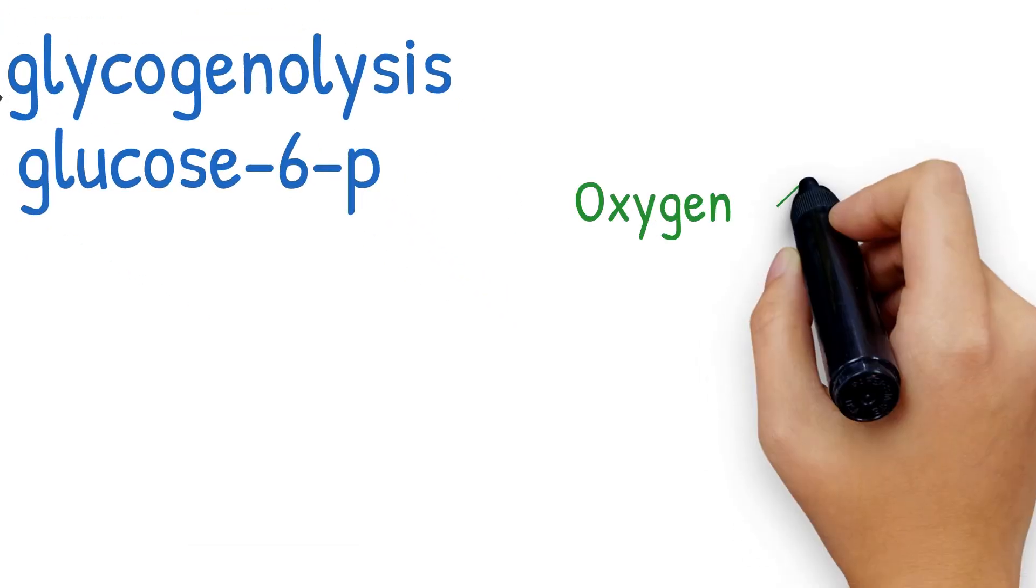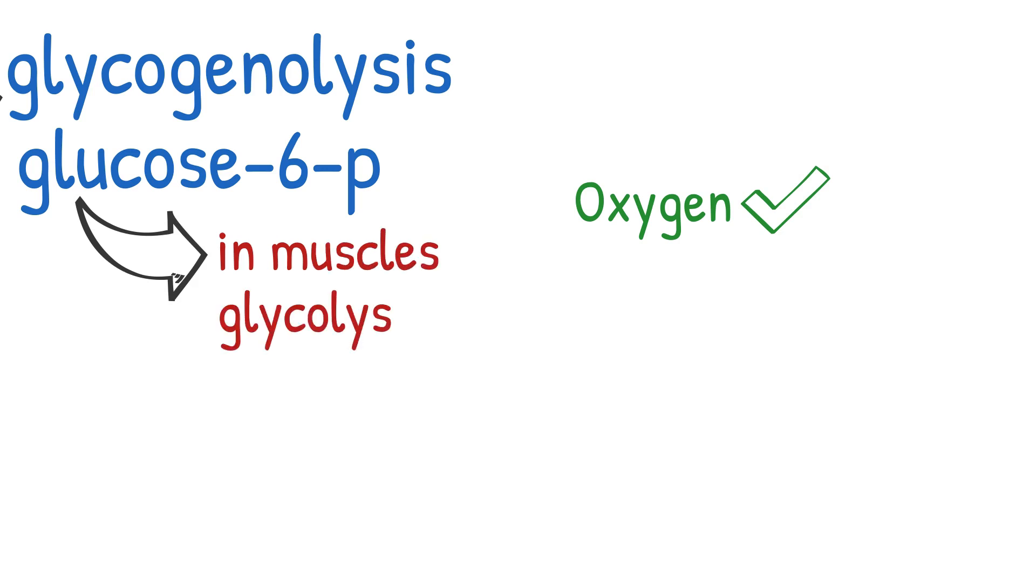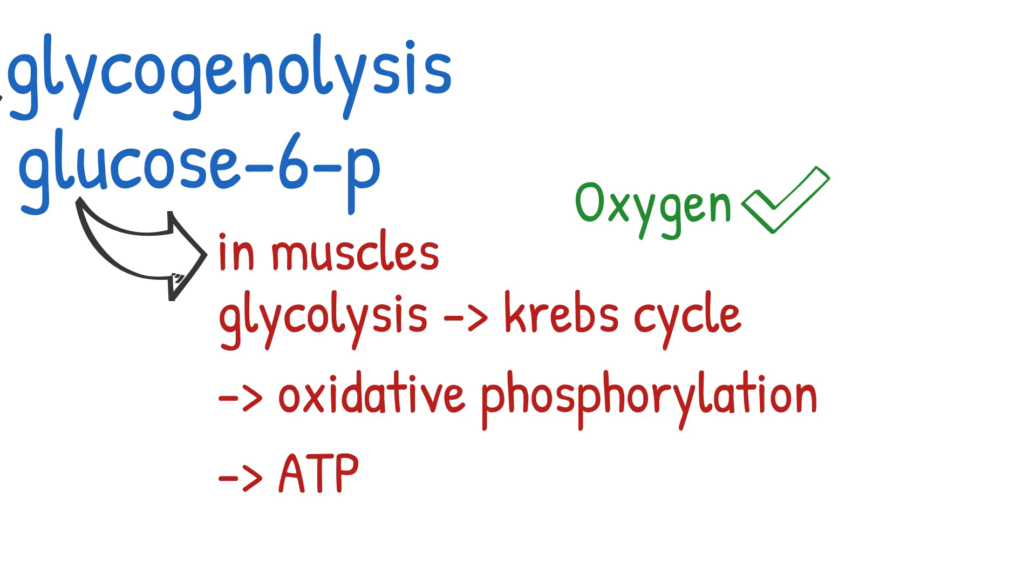In presence of oxygen in muscles, glucose 6-phosphate goes through glycolysis, Krebs cycle and oxidative phosphorylation to produce enough ATP for muscles energy.